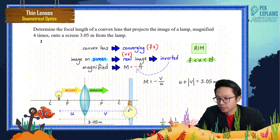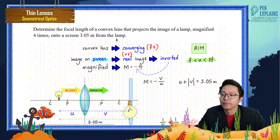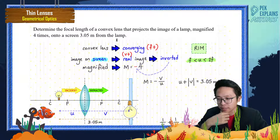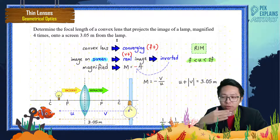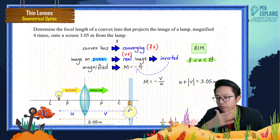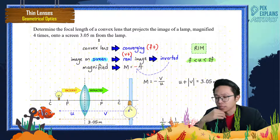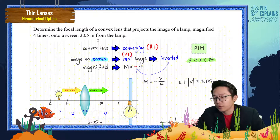Let's look at this question: determine the focal length of a convex lens that projects the image of a lamp magnified four times onto a screen 3.05 meters from the lamp. This is a very good question because in only one sentence it contains so many keywords that reveal a lot of things. Let's look at them one by one.